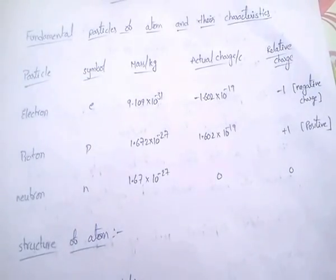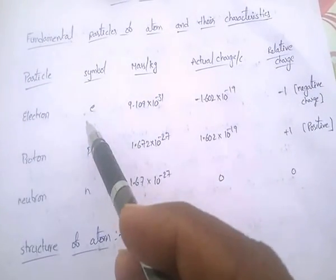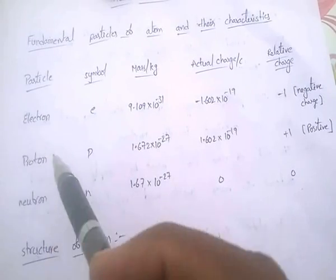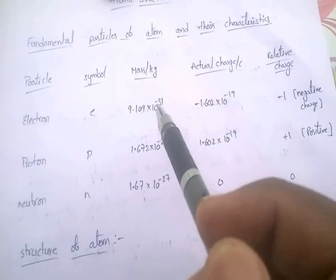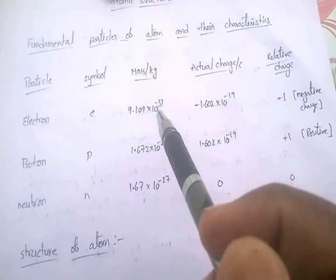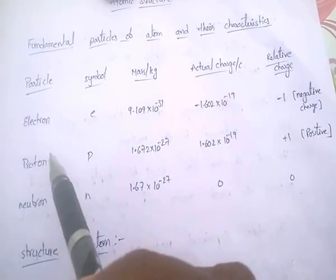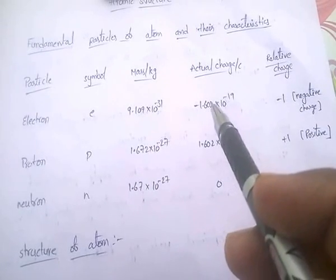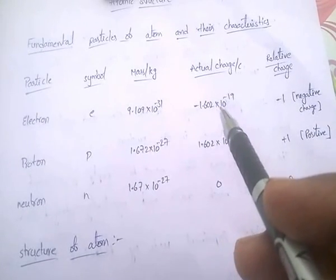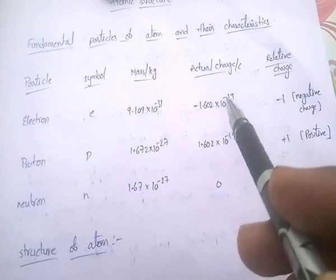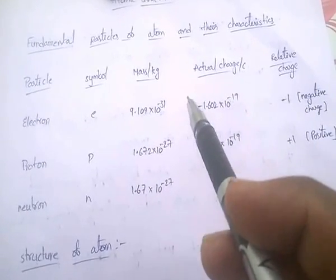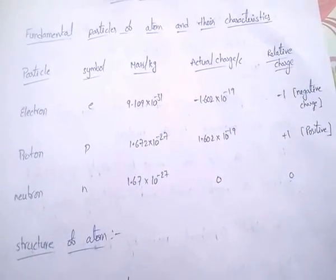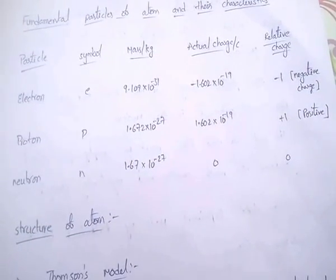So, the symbol of electron is E. The mass of electron is 9.101 × 10⁻³¹. The charge of electron is −1.602 × 10⁻¹⁹. Minus means electron is a negatively charged particle.